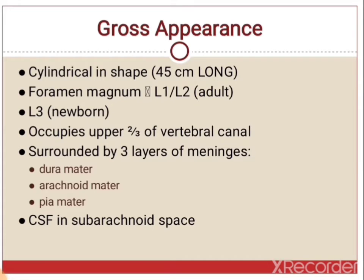The length is 45 cm and it extends from the foramen magnum up to the intervertebral disc between L1 and L2. In the newborn it extends up to L3 vertebra. It occupies the upper two-thirds of the vertebral canal and is surrounded by three meninges: the outermost dura mater, in the middle arachnoid, and the innermost pia mater. CSF is found in the subarachnoid space, which lies between the arachnoid and pia mater.